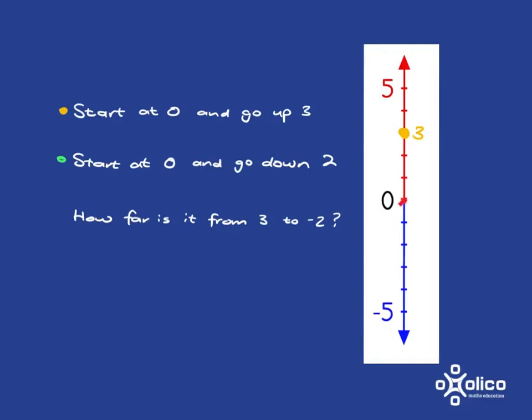If you start at zero and walk down two steps, you end up over here and that is negative 2 on the number line. So if you started at zero and went up four steps, you'd end up at 4 on the number line. If you started at zero and went down five steps, you would end up over here at negative 5 on the number line.